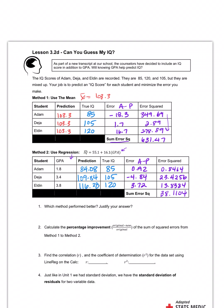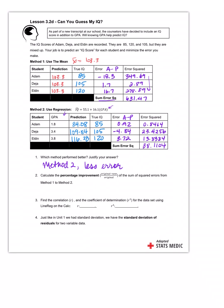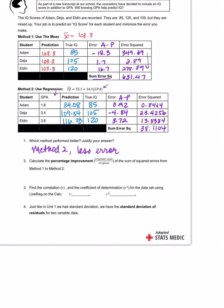And then when I add them up: 38.1104. All right, a lot of math there. Now which method would be better to use? The regression line, the second method. And why is that? Yeah, Method 2 - there is less error, right? Less error. That's what we want. We want good predictions, which means we want less error if possible.